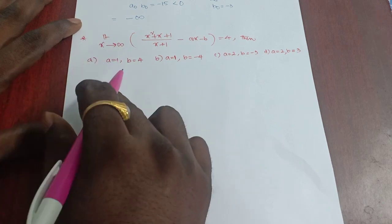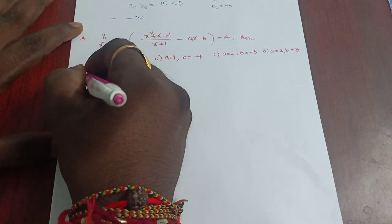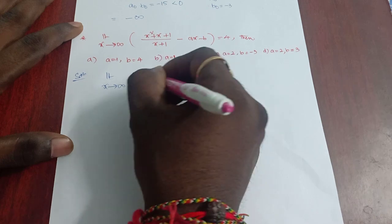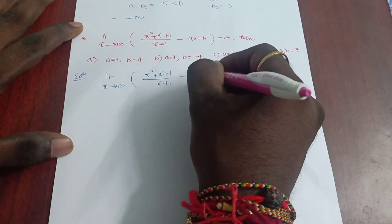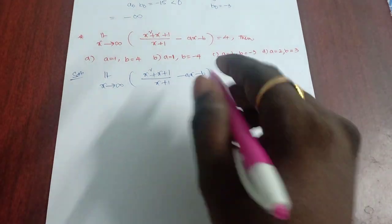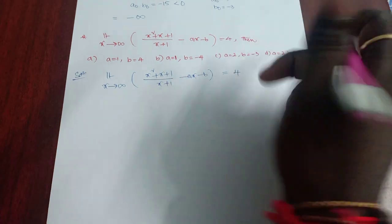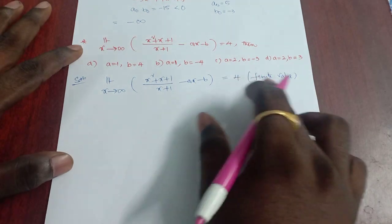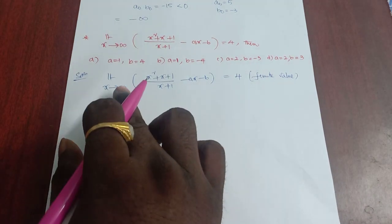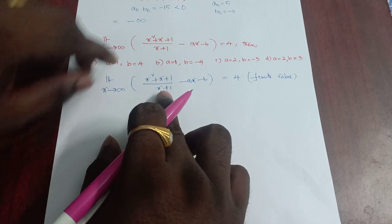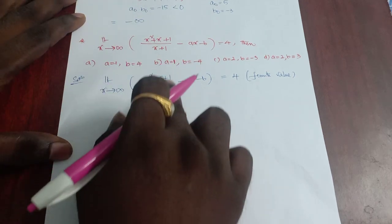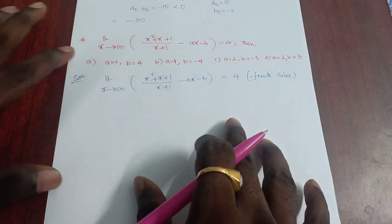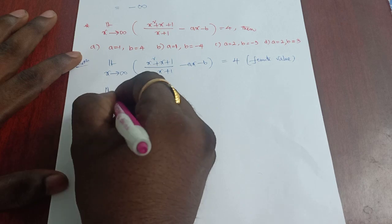Problem 2: limit x→∞ of [√(x² + x + 1) / (x + 1)] − ax − b = 4. The limit value is 4, which is a finite number. As x→∞, each part separately approaches infinity, making this an infinity minus infinity indeterminate form. So we evaluate by taking LCM (x+1).